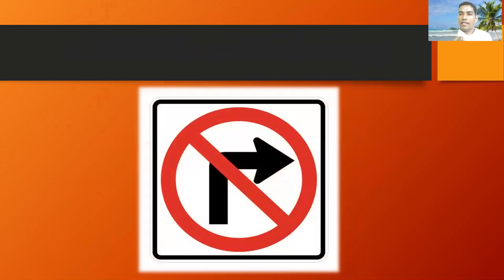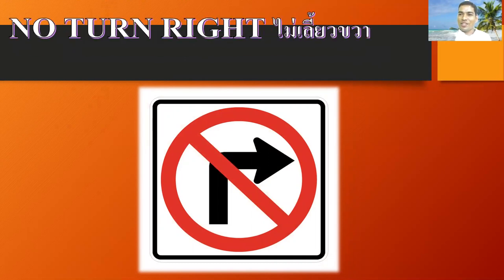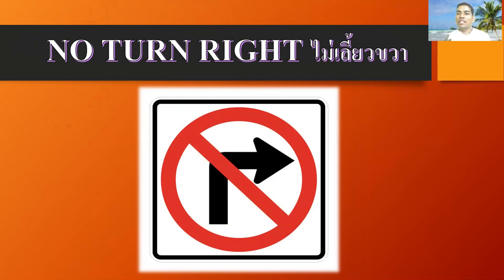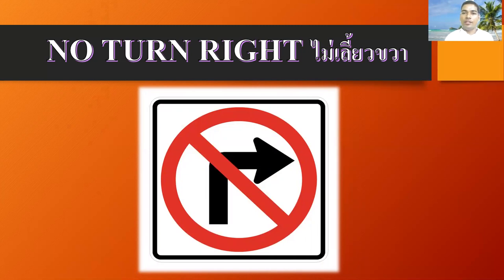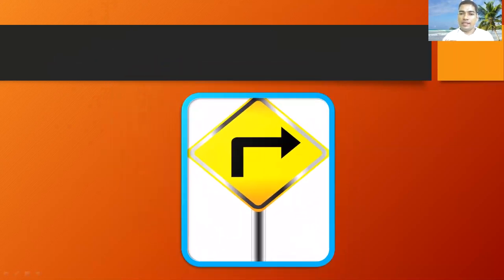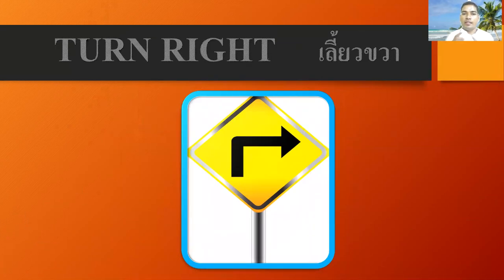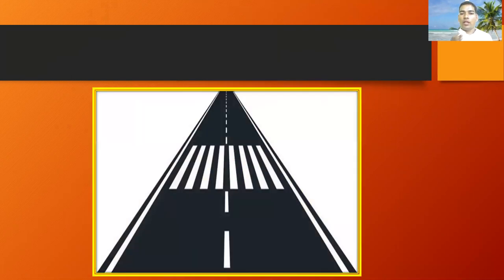Next, what sign is this? This sign is showing about no right turn. If you see this sign on the road, you must understand it means no right turn. Next, what sign is this? If you see this type of sign on the road, you must understand it means turn right.